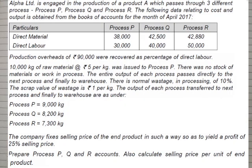It is given that Alpha Limited is engaged in the production of product A which passes through three different processes P, Q and R. The data relating to cost and output is given for the month of April 2017. The direct material cost and the direct labour costs have been given. 10,000 kg of raw materials at five rupees per kg was issued to process P. There was no stock of material or work in progress. The entire output of each process passes directly to the next process and finally to the warehouse.